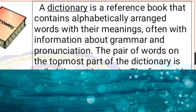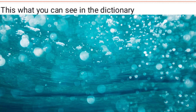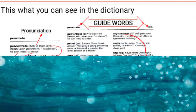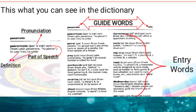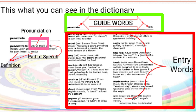A dictionary is a reference book that contains alphabetically arranged words with their meanings, often with information about grammar and pronunciation. In a dictionary, we have what are called guide words. So you can see in the dictionary we have the guide words, the entry words, the pronunciation, parts of speech, and definition as demonstrated by the arrow.